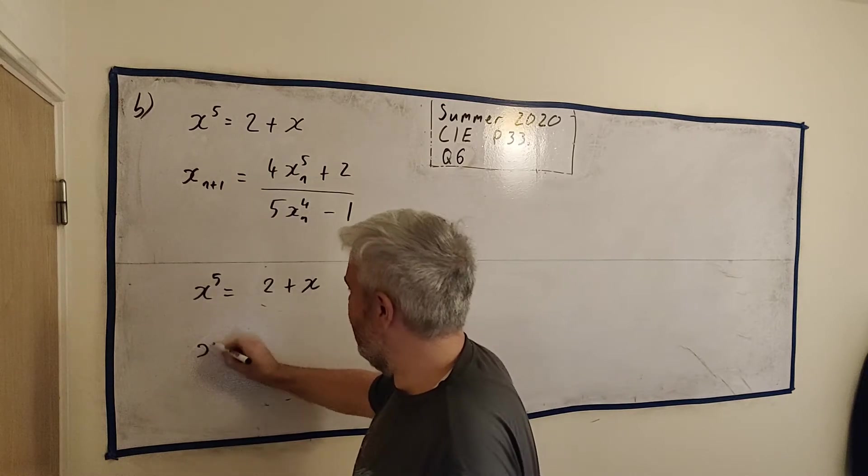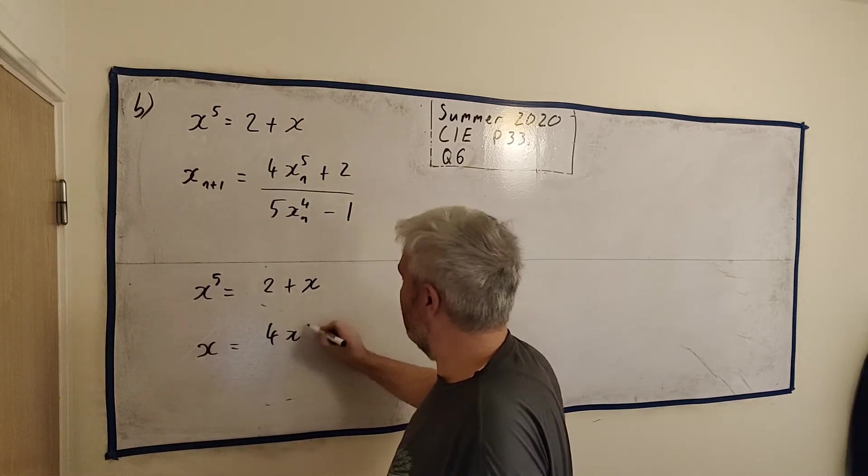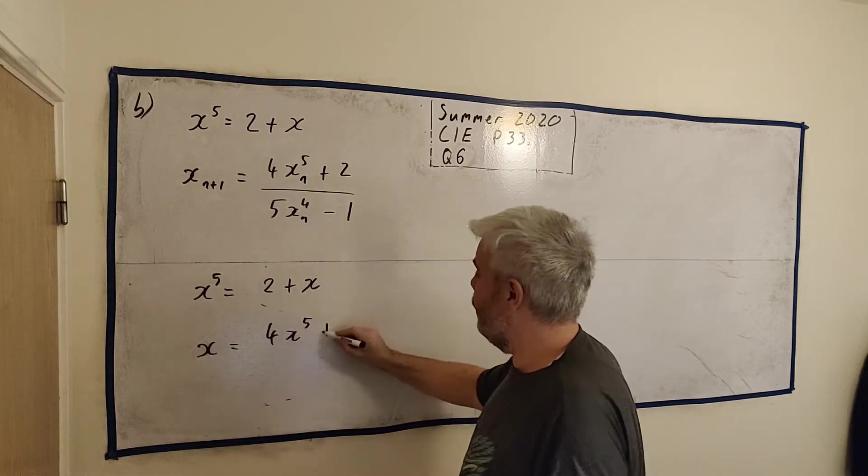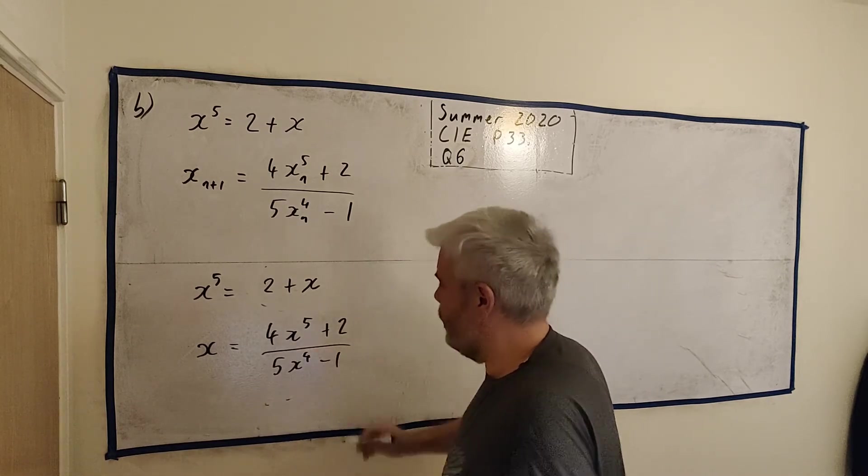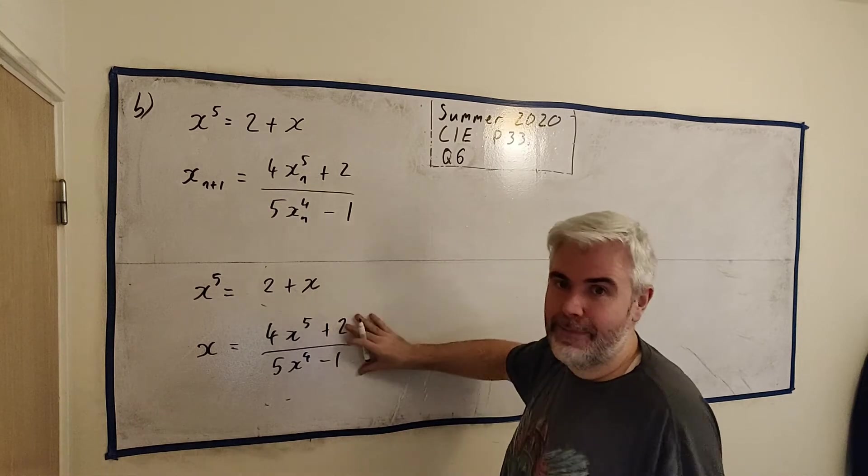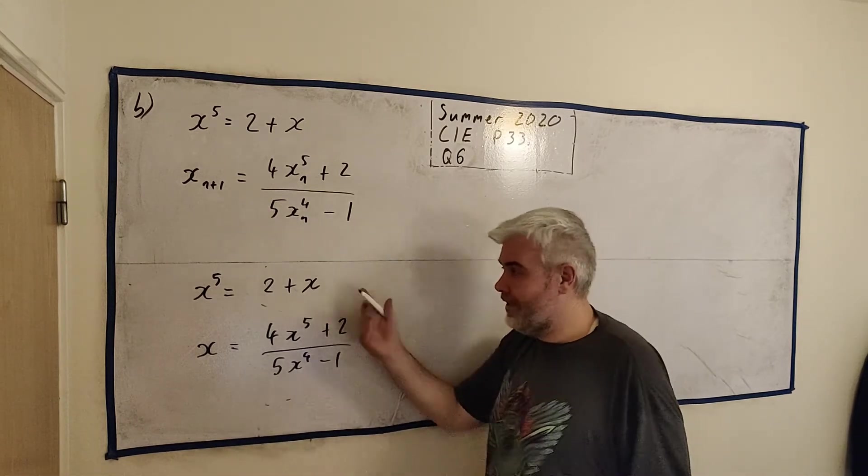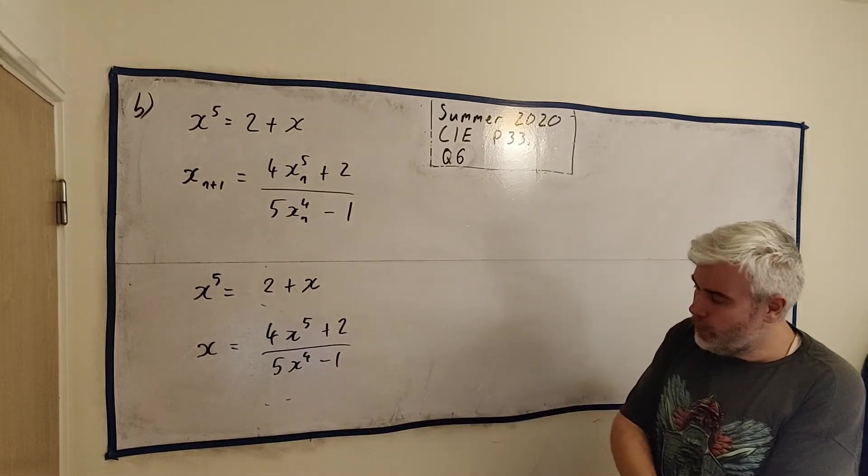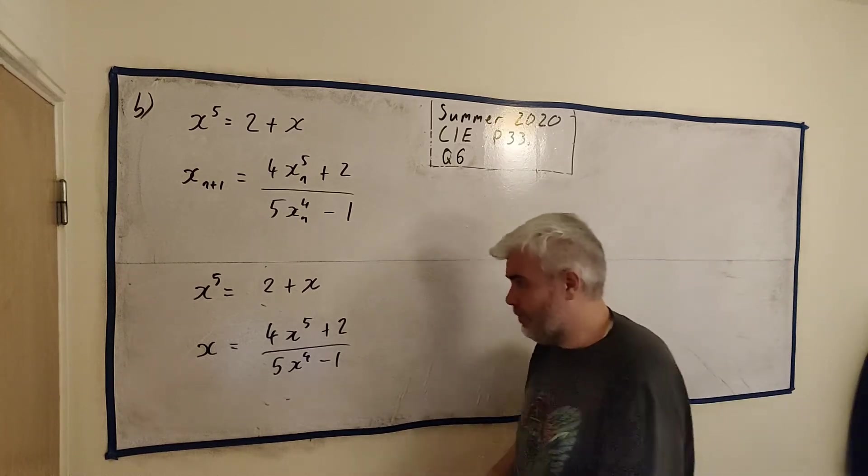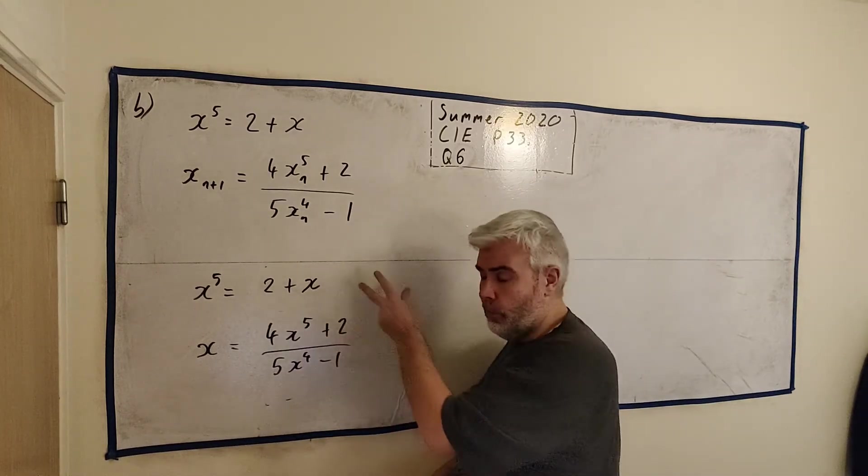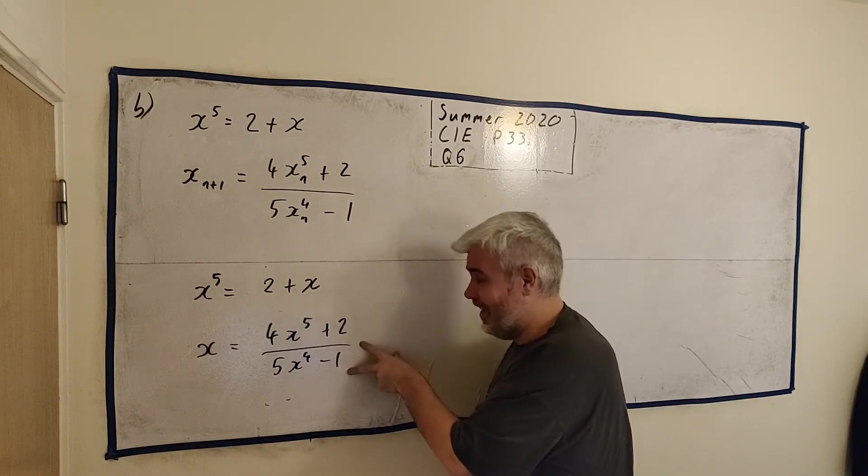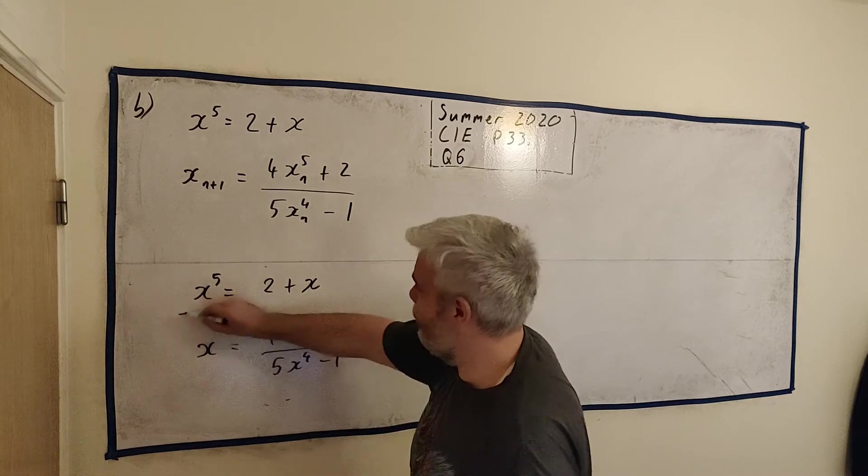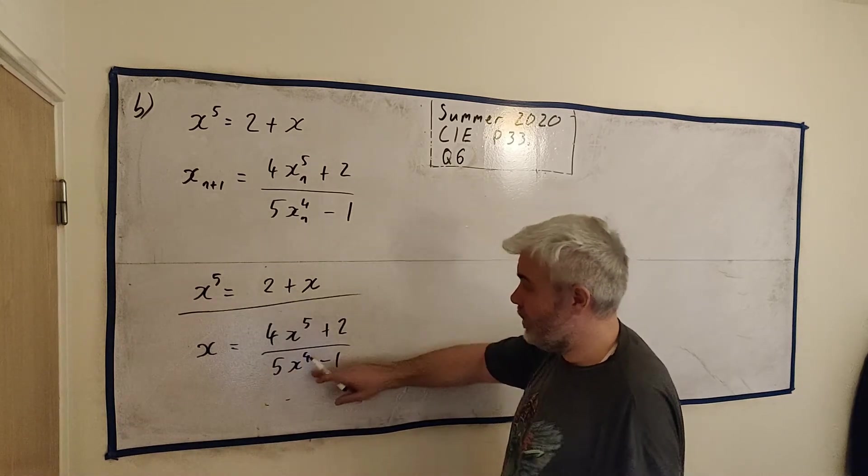So if I rewrite this, x equals 4x to the power of 5 plus 2 over 5 times x to the power of 4 minus 1. They're asking, is this the same as this? Or show that this is the same as this one. That's what they're asking. And you can do that by playing with either one. Either one you want, and make it look like the other one. I would suggest this one's a lot easier, it's just one or two lines in fact. So we're just going to take the bottom one here and change it.